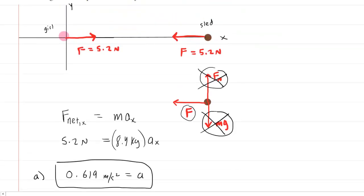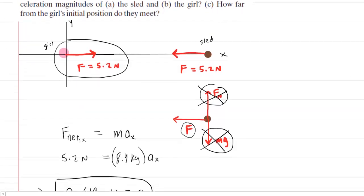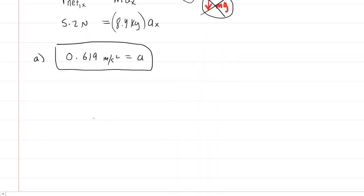In part B we are asked to determine the acceleration of the girl. The only horizontal force acting on her is 5.2 Newtons. Notice that according to Newton's third law, if she pulls on the sled with a force of 5.2 Newtons, then the sled pulls on her with an equal but oppositely directed force of 5.2 Newtons.